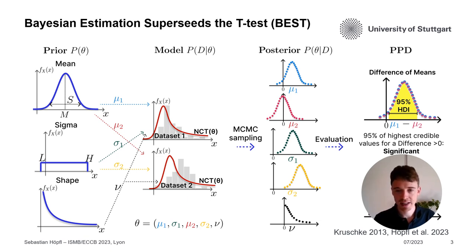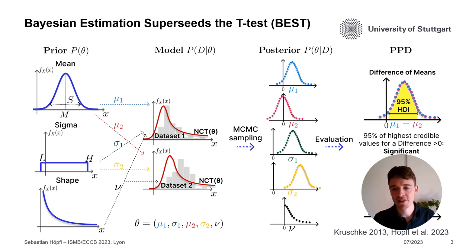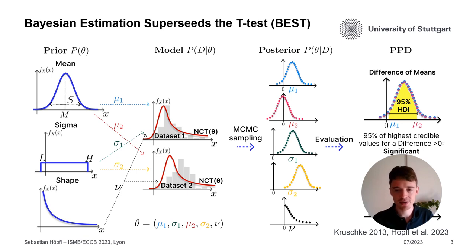If we then look at the difference of means — the difference of these posterior mean distributions — and 95% of the highest density interval of these values indicates a difference larger than zero between the two datasets, then we have a credible and significant difference of the means of these underlying datasets.